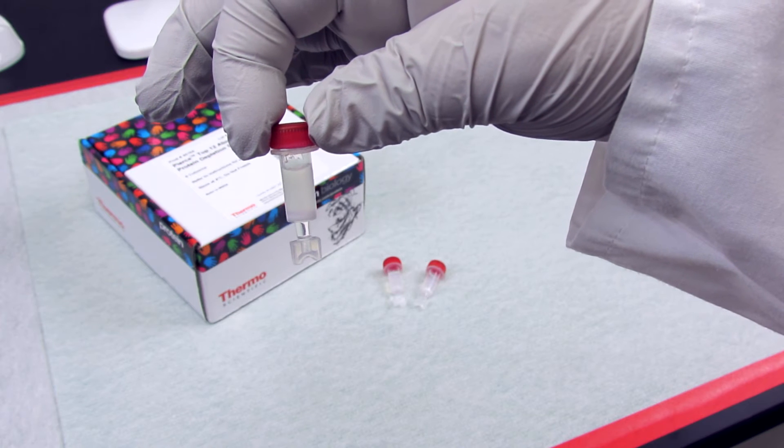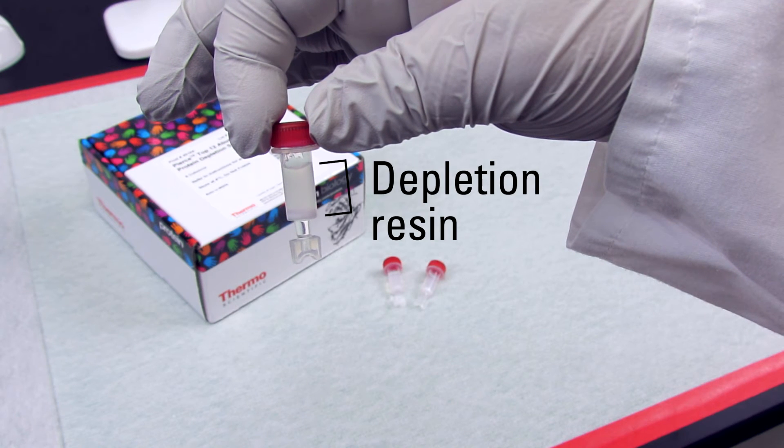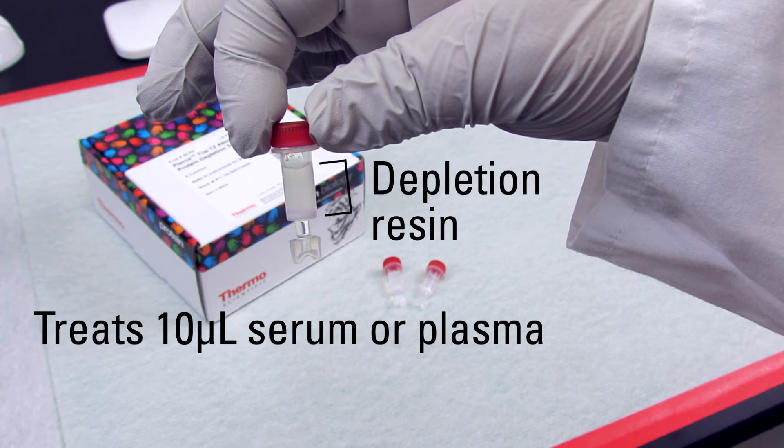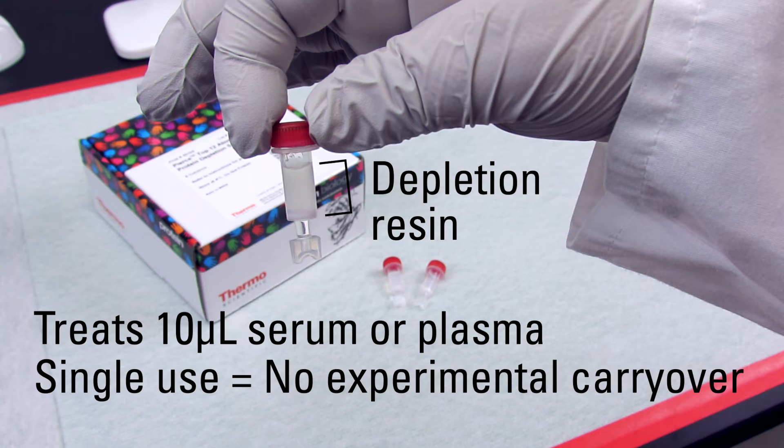Each spin column is pre-filled with sufficient resin to deplete abundant proteins in 10 microliters of serum or plasma. And because the columns are single-use, you don't have to worry about experimental variability caused by abundant protein carryover.